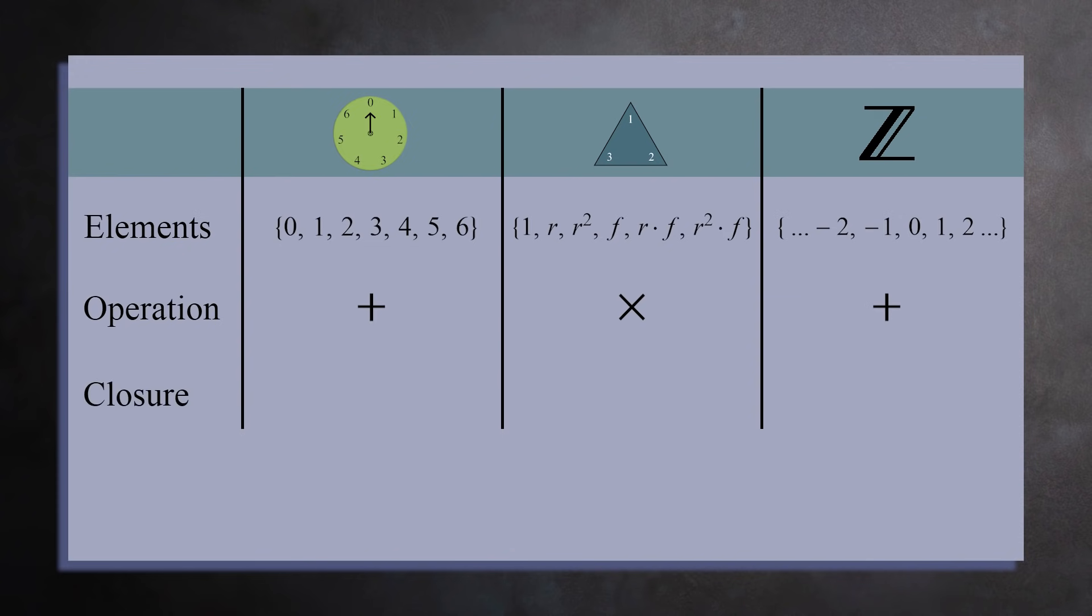It's also important to remember that each of the three sets are closed under the operation. That is, if you pick any two elements A and B in the set and combine them, you get another element in the set.